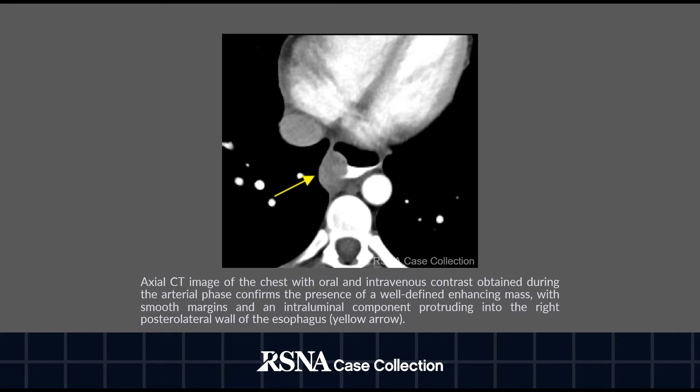Here is a CT image of the chest with oral and intravenous contrast obtained during arterial phase, confirming the presence of a well-defined enhancing mass with smooth margins and an intraluminal component protruding into the right posterolateral wall of the esophagus.